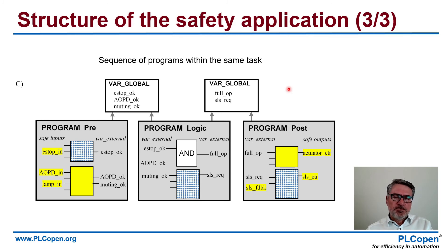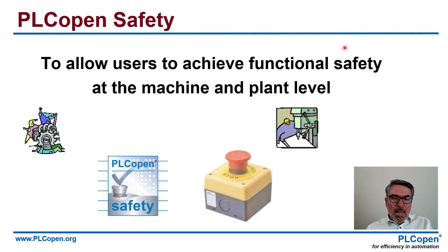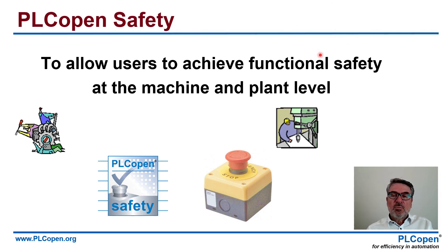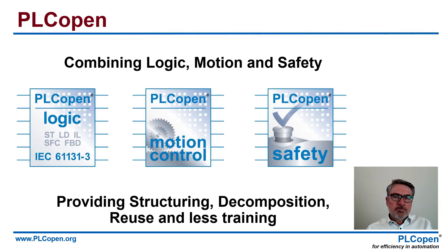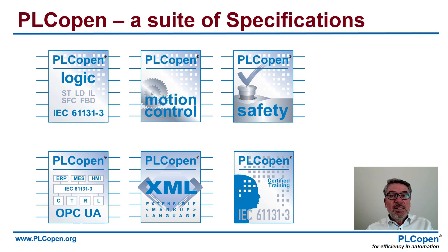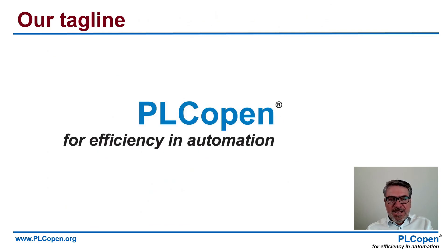PLC Open Safety allows the user to achieve functional safety at the machine and plant level — we are more focused on machines. This is what we want: to help you achieve functional safety easily, so you save time, save cost, get fewer errors, and your program is much more transparent and easier to certify. The basis of PLC Open is to combine the logic, the motion, and the safety, providing structuring and decomposition, reuse, and less training. On top of that, we added communication via OPC UA, exchange via XML, and training guidelines. Our tagline: we want to provide you efficiency in automation.